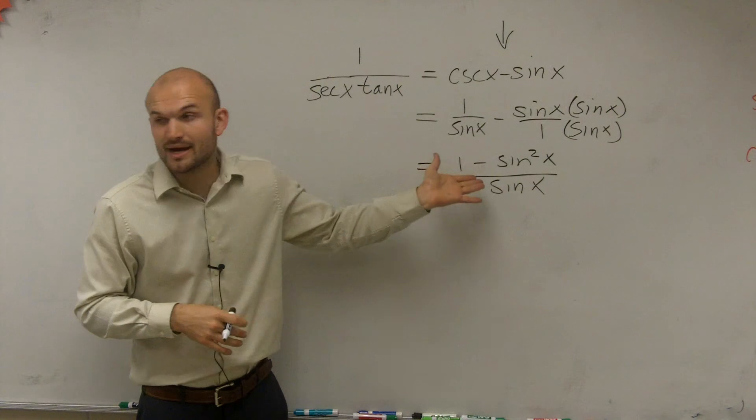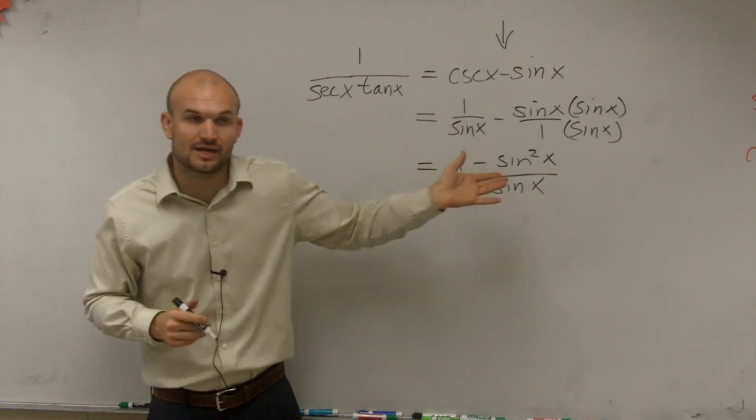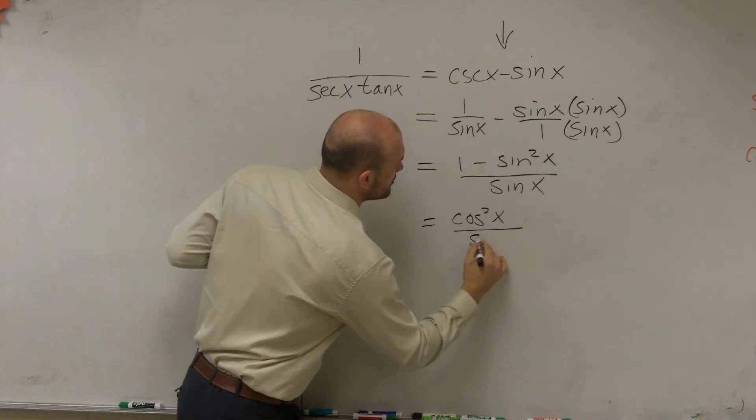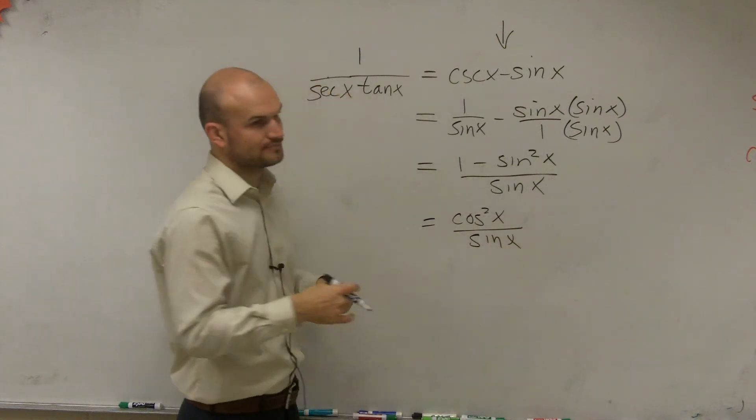Then I say 1 minus sine squared of x, by using my Pythagorean identities, equals cosine squared of x over sine of x.